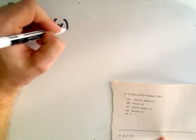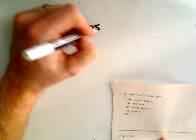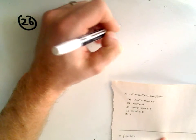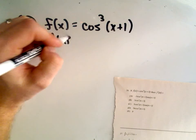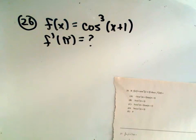Nothing too bad if you understand the notation and the chain rule. So in 26, they give you that f of x is cosine cubed of x plus 1. They say, if that's the case, then f prime of π, we want to know what that equals.